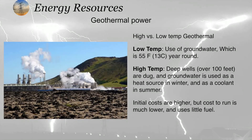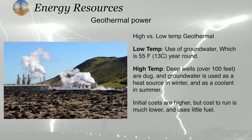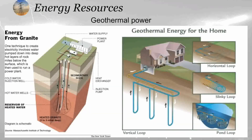In the high temperature type, deep wells are dug and groundwater is used as the heat source in winter and as a coolant in summer. Initial costs are higher, but the cost to run is very much lower. This is the layout of the geothermal power plant.